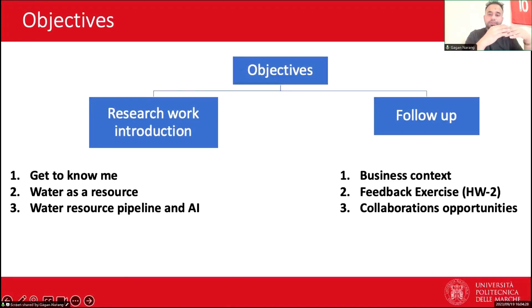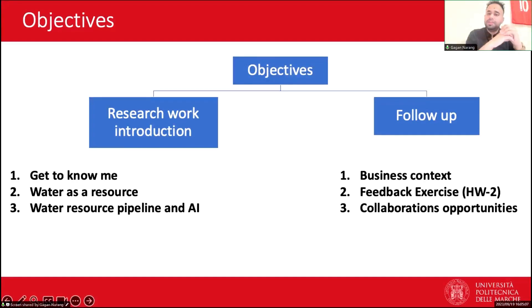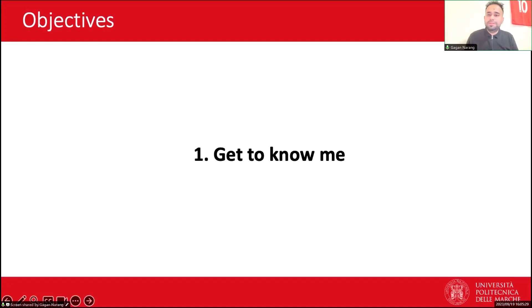In the first part, I'll take a moment to introduce myself, then expand on the major aspect of my research — water as a vital resource — and lastly explore the integration of AI into the water resource pipeline. The second part follows up with an international business context, viewing the water resource problem from a business point of view. We also have a homework exercise where we'll try to solve new water resource management problems using AI or data-driven approaches, identifying which machine learning taxonomy can be applied.